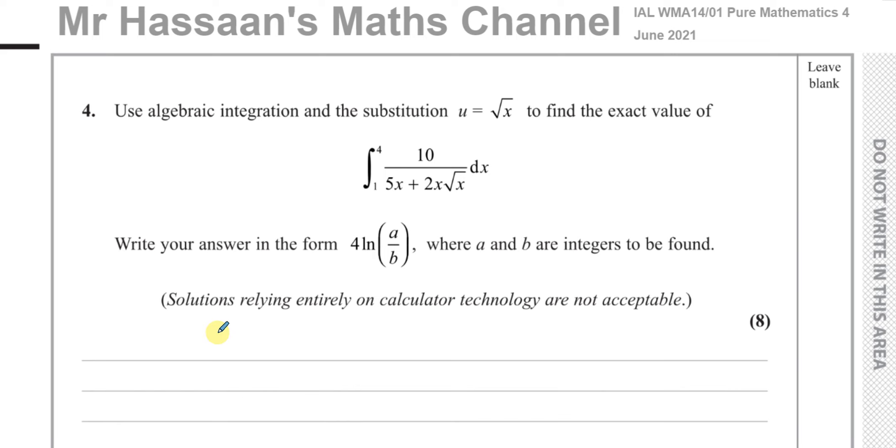So first of all, we want to use substitution. The way I like to set up substitutions is as follows. I always like to write down finally the integral of y with respect to x. That's our goal. Where y is the function that they gave us: 10 over 5x plus 2x to the power of 3 over 2. I'm writing like that just to make it easier for us when we maybe have to integrate. Actually, I think I will leave it like this because we have root x there. You're going to replace the root x with u, so that might be better to leave it like that for now.